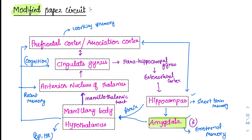The para-hippocampal gyrus is involved in an important factor called spatial memory — remembering spaces, roadways, and pathways. This has been studied beautifully with London taxi drivers. Before the era of Google Maps, researchers studied London taxi drivers and found that their para-hippocampal gyrus along with their hippocampus were larger in size, because they were continuously navigating and their spatial memory was very, very good.